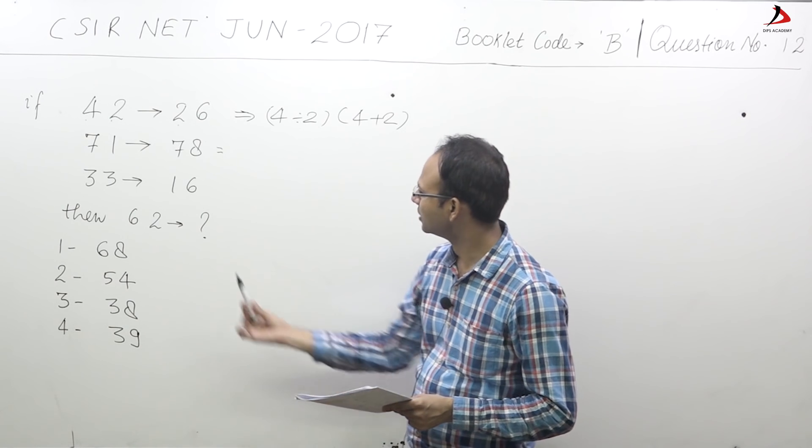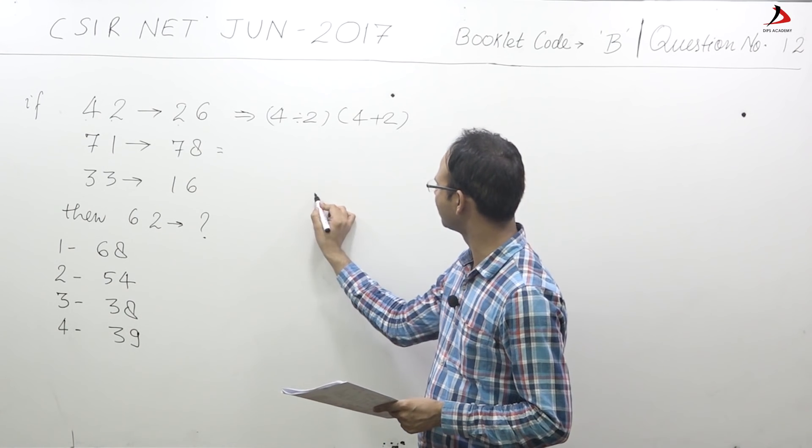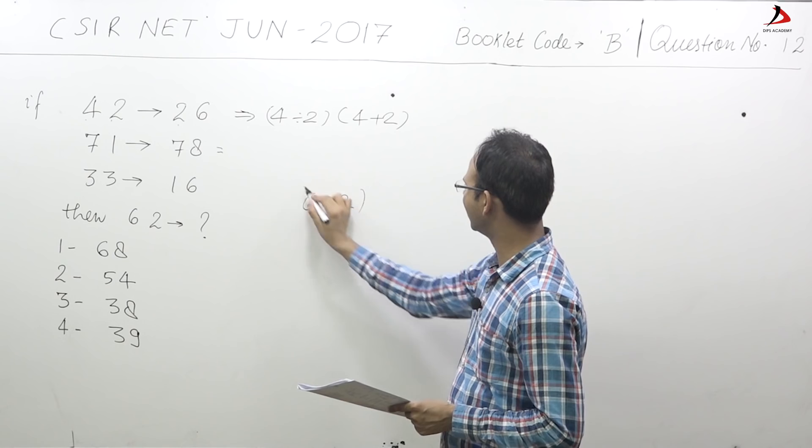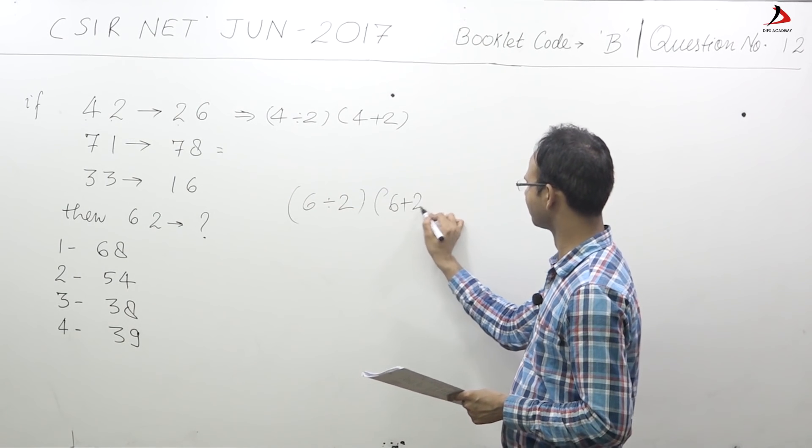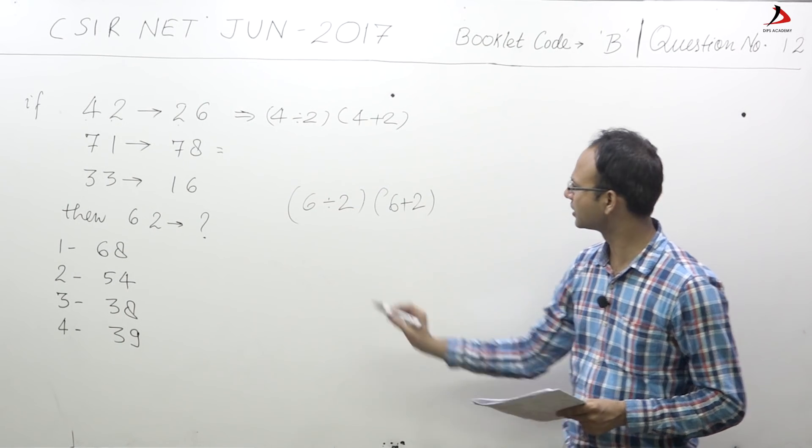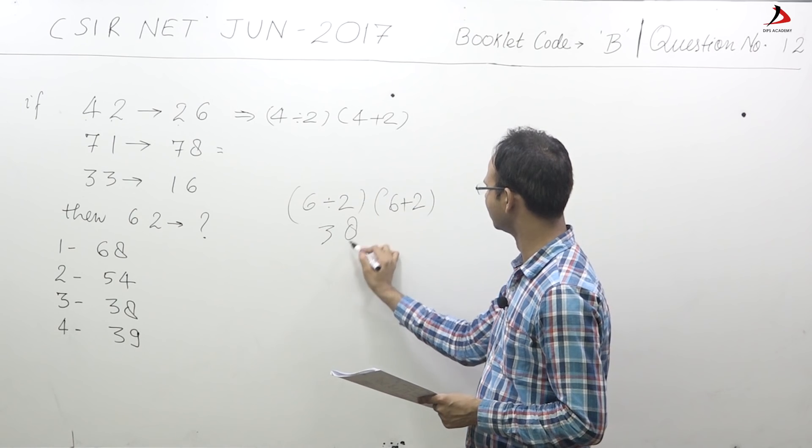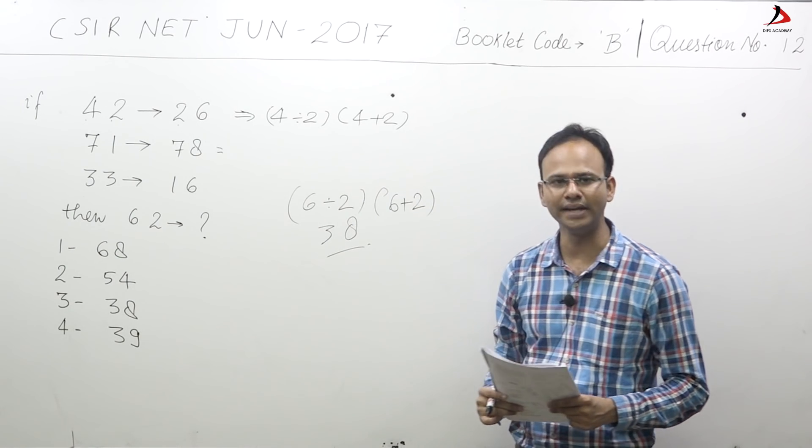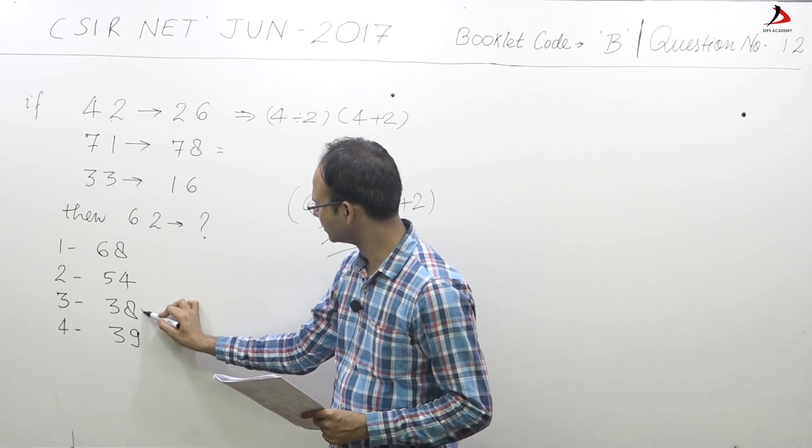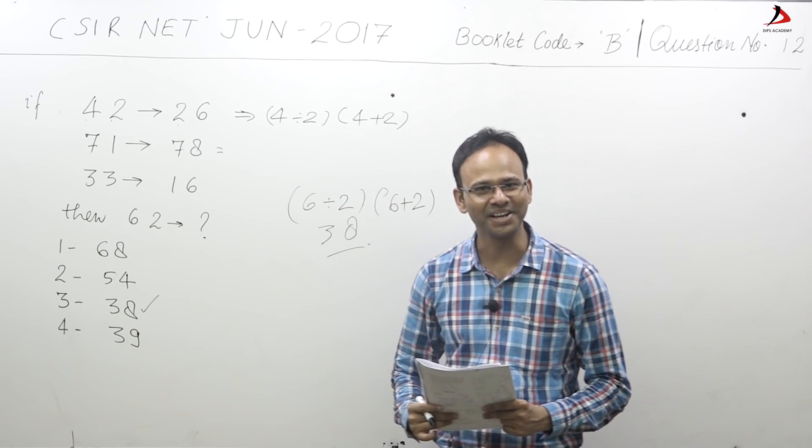62 will be what? 6 divided by 2 and 6 plus 2. So this is 3 and 8. The answer is 38. Correct option is 3. Thank you everyone.